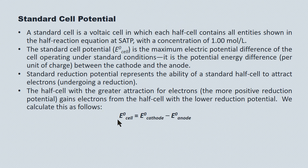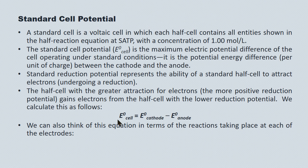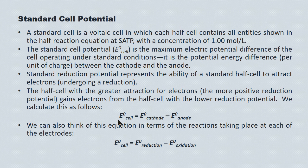We calculate this with the following equation: the electrical potential for the overall cell equals the electrical potential for the cathode minus the electrical potential for the anode. We can think of this equation in terms of the chemical reactions taking place at each of the electrodes — the electrical potential of the cell equals the electrical potential of the reduction minus the electrical potential of the oxidation.